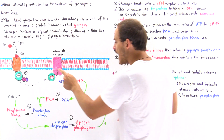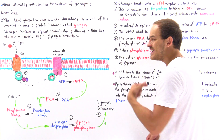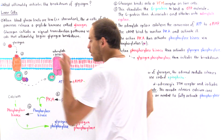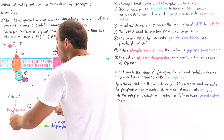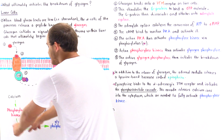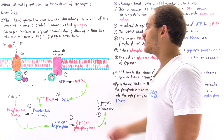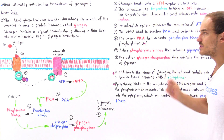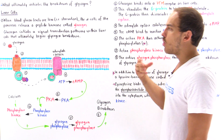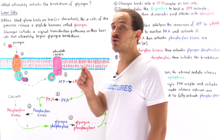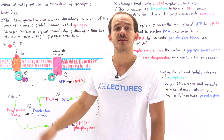Together, glucagon stimulates PKA to phosphorylate phosphorylase kinase, while epinephrine helps release the calcium ions also needed to activate phosphorylase kinase. Combined, this causes the activation of phosphorylase kinase needed to begin glycogen breakdown inside liver cells. For skeletal muscle cells, it is epinephrine that stimulates the breakdown of glycogen and the ultimate generation of ATP from glucose molecules, allowing skeletal muscles to generate voluntary motion.